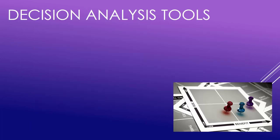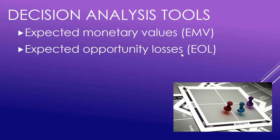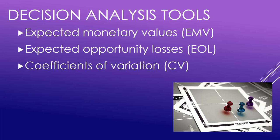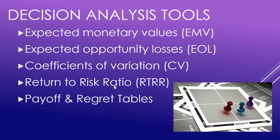The tools we're going to look at in this video series are: the Expected Monetary Value (EMV), which is like your average return; the Expected Opportunity Losses (EOL), which are your potential lost opportunities depending on which decision you make; the Coefficient of Variation (CV), which measures how variable each decision is; and the Return-to-Risk Ratio, which shows how much benefit there is compared to the risk for each decision.